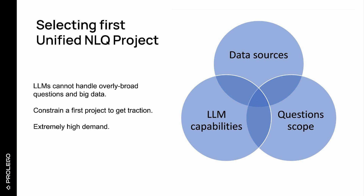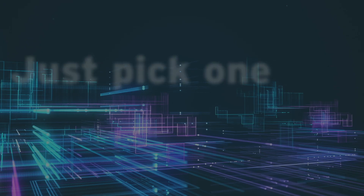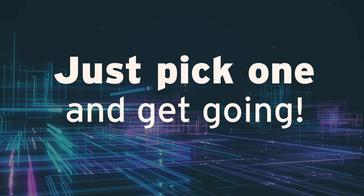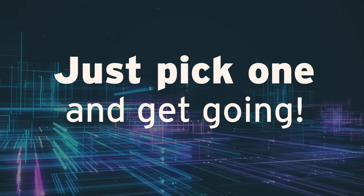Success requires choosing a first project that considers the LLM's limitations, a subset of data, and a constrained business problem. These guidelines should help you select an initial project, but don't expect high confidence. Pick a project, get going, and change direction as you learn. You will make progress by executing, not talking.